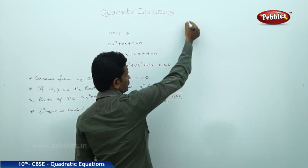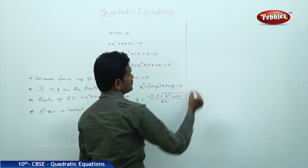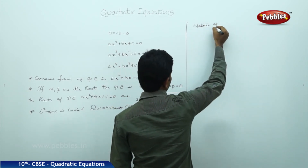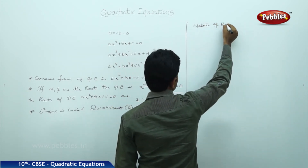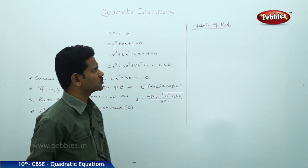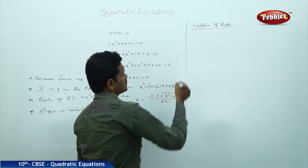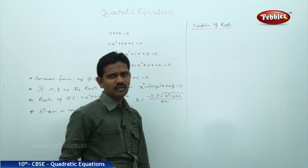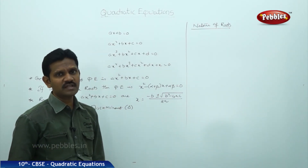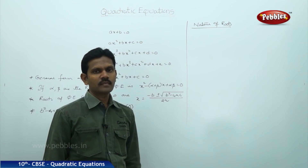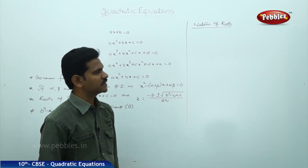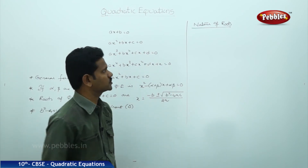Based on the value of delta, we can decide what type of roots the given quadratic equation has. Based on the value of delta, we can decide the nature of the roots.